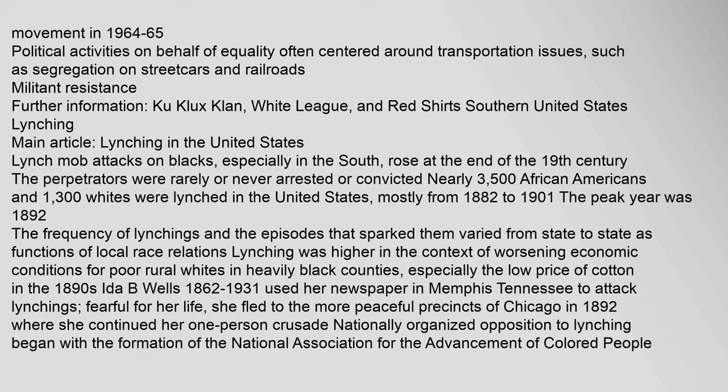Lynch mob attacks on blacks, especially in the South, rose at the end of the 19th century. The perpetrators were rarely or never arrested or convicted. Nearly 3,500 African Americans and 1,300 whites were lynched in the United States, mostly from 1882 to 1901. The peak year was 1892. The frequency of lynchings and the episodes that sparked them varied from state to state as functions of local race relations; lynching was higher in the context of worsening economic conditions for poor rural whites in heavily black counties, especially the low price of cotton in the 1890s.